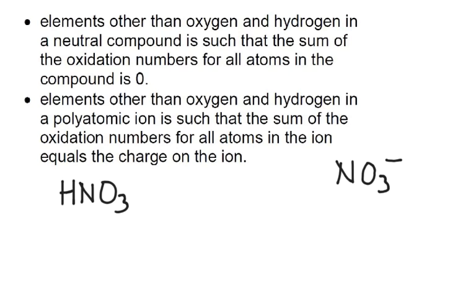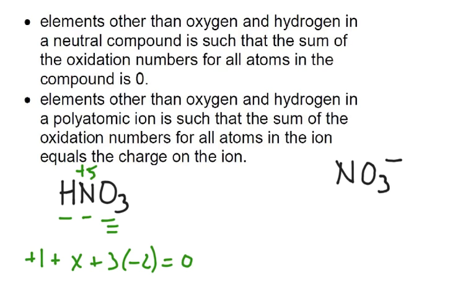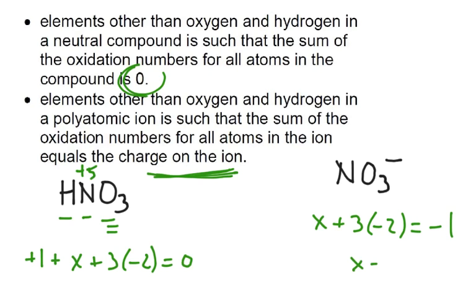The last two ideas: if a compound is neutral, all the oxidation numbers add up to 0. For example, if we don't know nitrogen's oxidation number in HNO₃, hydrogen is plus 1, nitrogen is x, and there are 3 oxygens at minus 2 each — 1 + x + 3(−2) = 0, giving x = plus 5. For an ion like nitrate (NO₃⁻), the oxidation numbers must add up to the ion's charge. So x + 3(−2) = −1, and again x equals positive 5. It's the same approach whether it's a neutral compound or an ion.